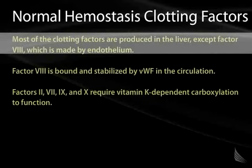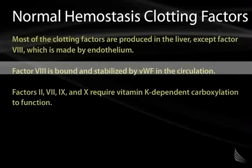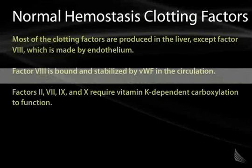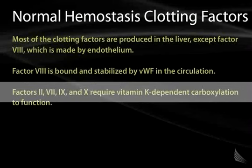Most clotting factors are produced in the liver, except for factor VIII, which is secreted by endothelia. Factor VIII is bound and stabilized by von Willebrand factor in circulation, which becomes important in the setting of deficient von Willebrand factor. Factors II, VII, IX, and X are vitamin K dependent clotting factors, which is the pharmacologic basis for the use of warfarin — a vitamin K inhibitor that directly inhibits the production of factors II, VII, IX, and X.